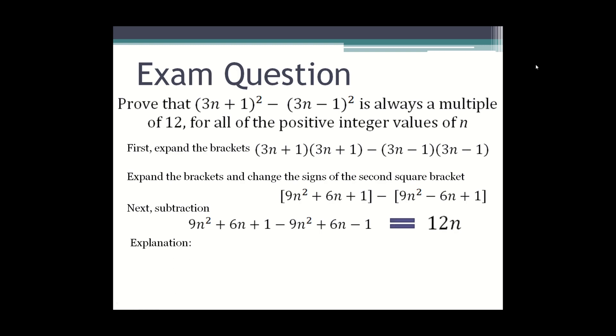And then your explanation would be that any number multiplied by 12 is a multiple of 12. The three dots means therefore which is the mathematical way of writing therefore.